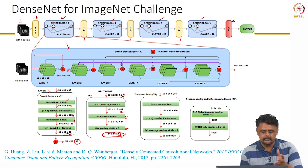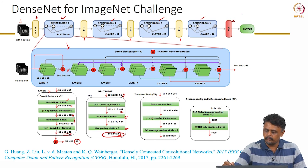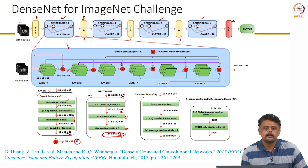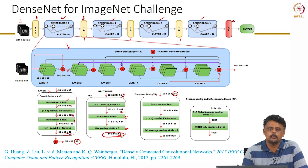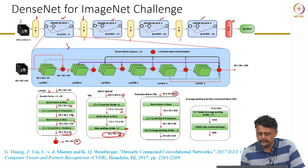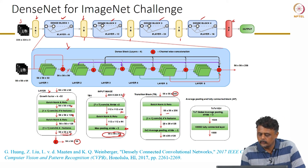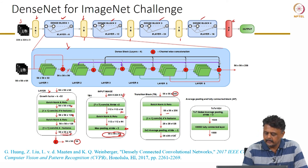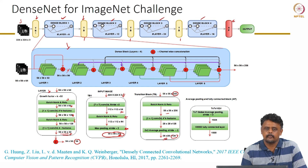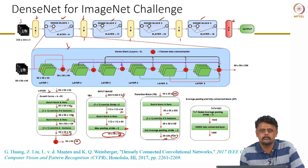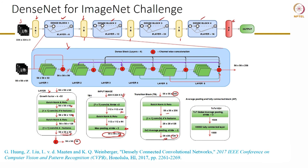After going through all the dense blocks, when approaching the average pooling block, there are 1024 feature maps of size 7×7. Global average pooling is applied, and the result is fully connected to a 1000-dimensional activation followed by softmax for classification.